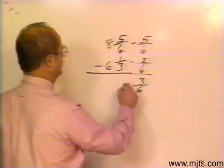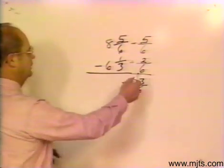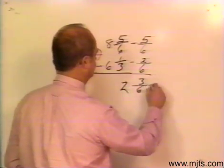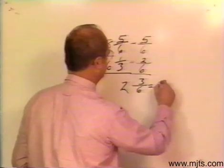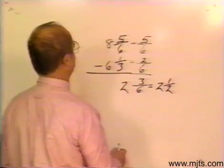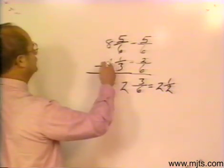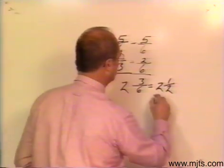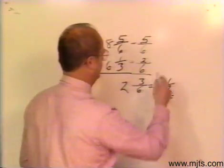And then, of course, my whole numbers I would have 2. Now, there again, this can be reduced and it should be reduced. That would be equal to 2 and 1/2 for an answer. So if I would subtract 6 and 1/3 from 8 and 5/6, it would go in there 2 and 1/2 times.